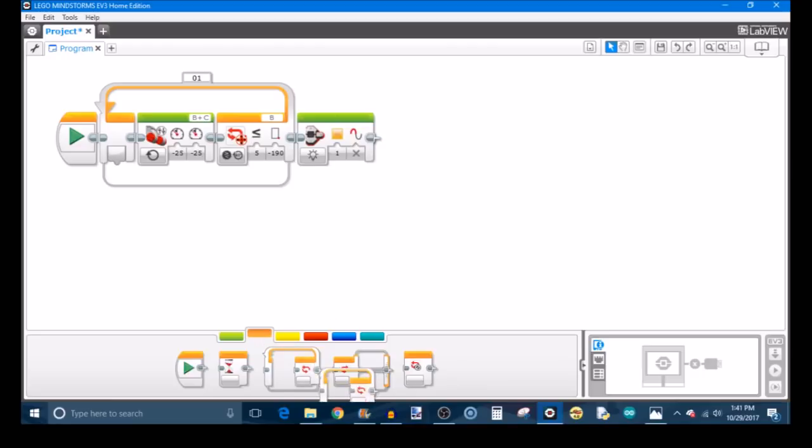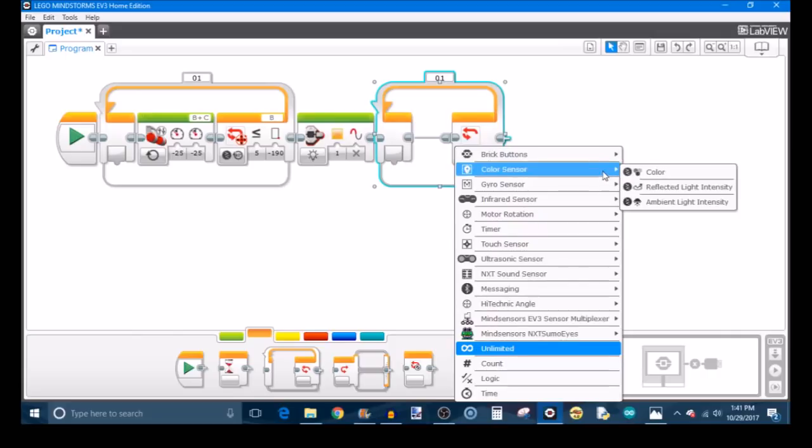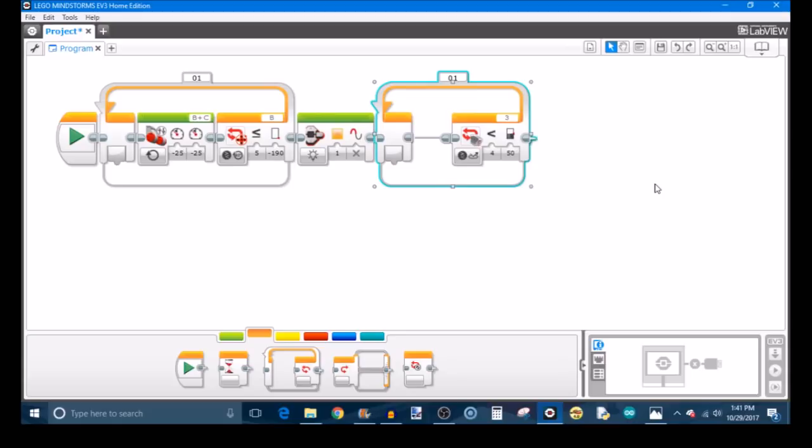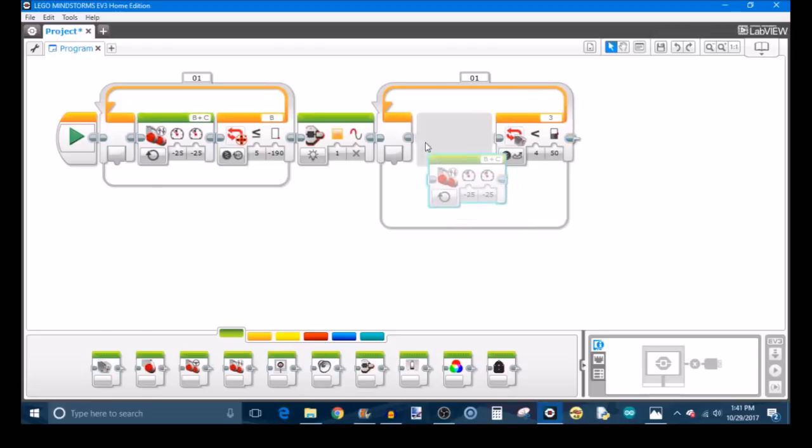We're now going to program the second stage, which uses another loop block. This time we're going to use the color sensor for the exit case and we're going to set this to reflected light intensity, because this is where the robot starts looking for the line. The contents of the second loop block are going to be the exact same thing as the first. You're just driving forward at that desired power, so you can just copy that right in like that.